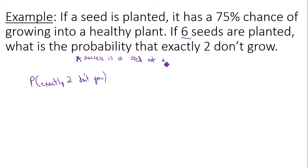So to conduct my binomial probability and calculate it, I need to find the probability that a seed does not grow. Well if the probability that a seed does grow is 75%, the probability a seed does not grow is 25% or 0.25. So this is my probability of a success p, that's 0.25.